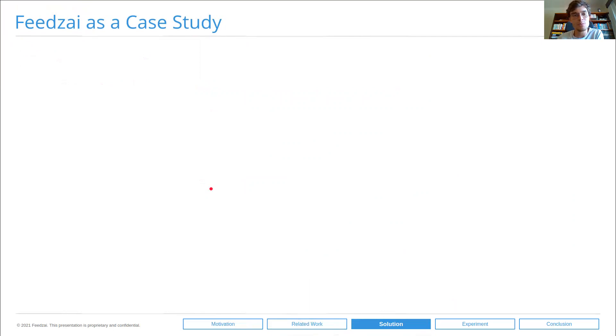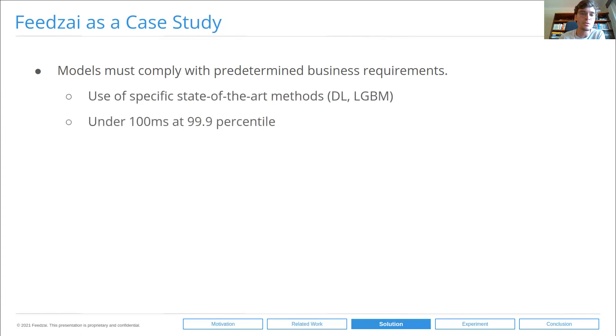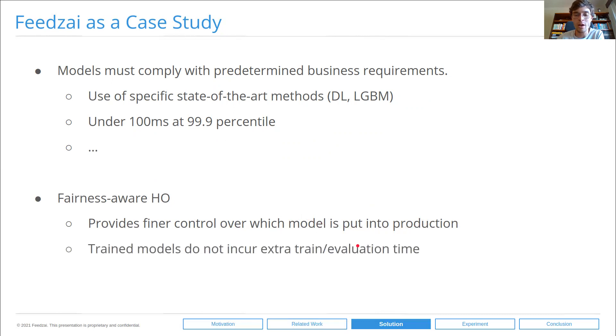We'll apply this methodology to our case study, our real-world case study at Feedzai. A couple of points on this case study is that we have multiple business requirements, as any company does. Models must comply with predetermined business requirements. For instance, the use of specific state-of-the-art methods such as deep learning or some other more interpretable machine learning methods such as decision trees. And also latency requirements. Any method that we devise must output a model that still complies with these requirements. Fairness-aware hyperparameter optimization emerges as an answer to this formulation. It provides finer control over which model is put into production because it is completely model agnostic. And it carries no extra train or evaluation time penalty, allowing us to keep up with the latency constraints.